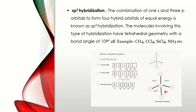Next, SP3 hybridization. The combination of 1S and 3P orbitals to form 4 hybrid orbitals of equal energy is known as SP3 hybridization. The molecules involving this type of hybridization have tetrahedral geometry with a bond angle of 109 degrees 28 seconds. Examples include CH4, CCL4, SICL4, NH3, etc.